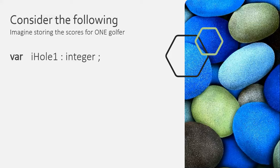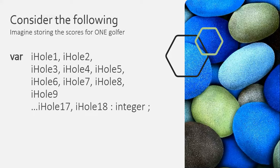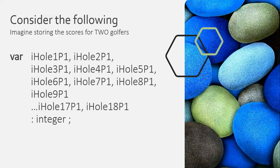You need an integer for hole one. You need another integer for hole two, and another one for hole three. You're going to need 18 variables for each hole that you're going to record a score for. That's quite a lot of variables — a massive amount. And that's only in the event that you've got one golfer. Imagine you've got two golfers.